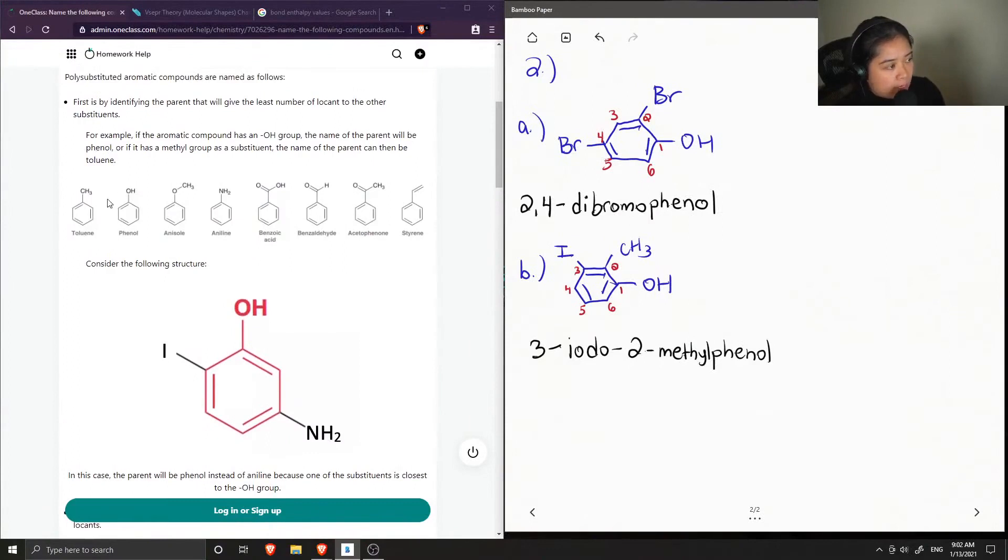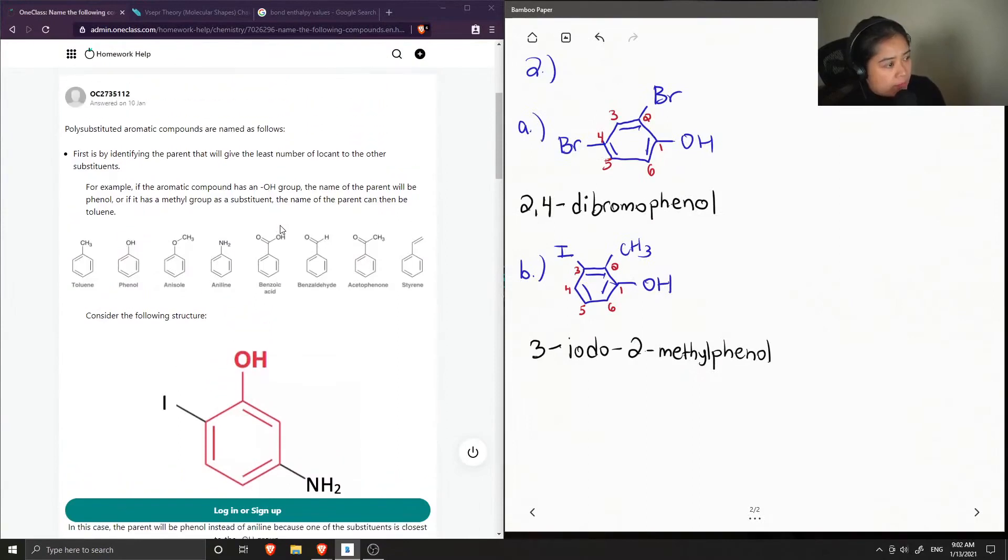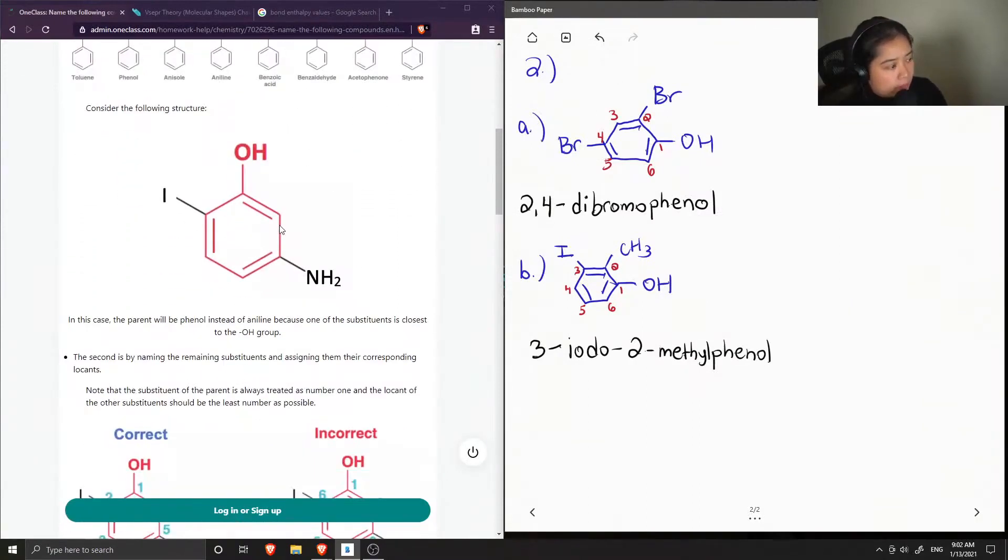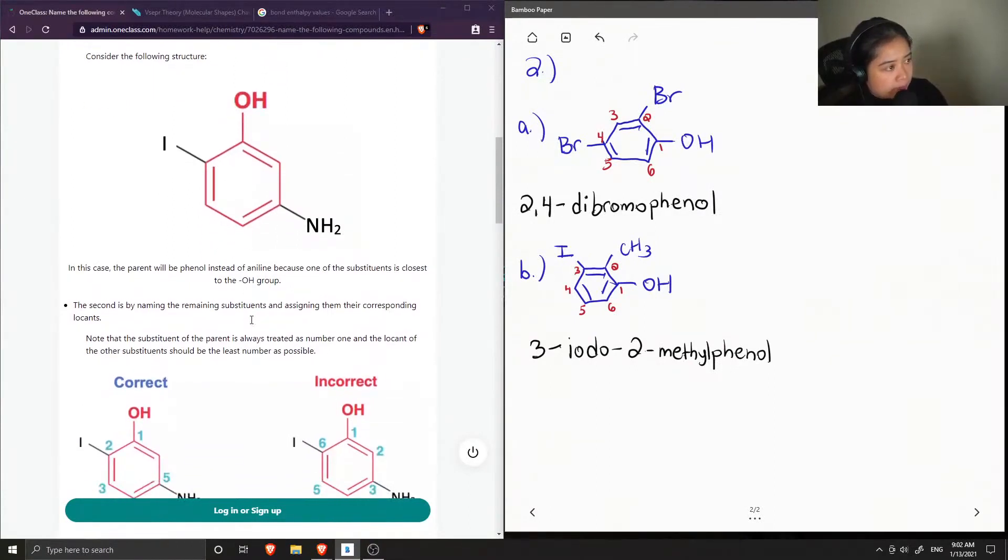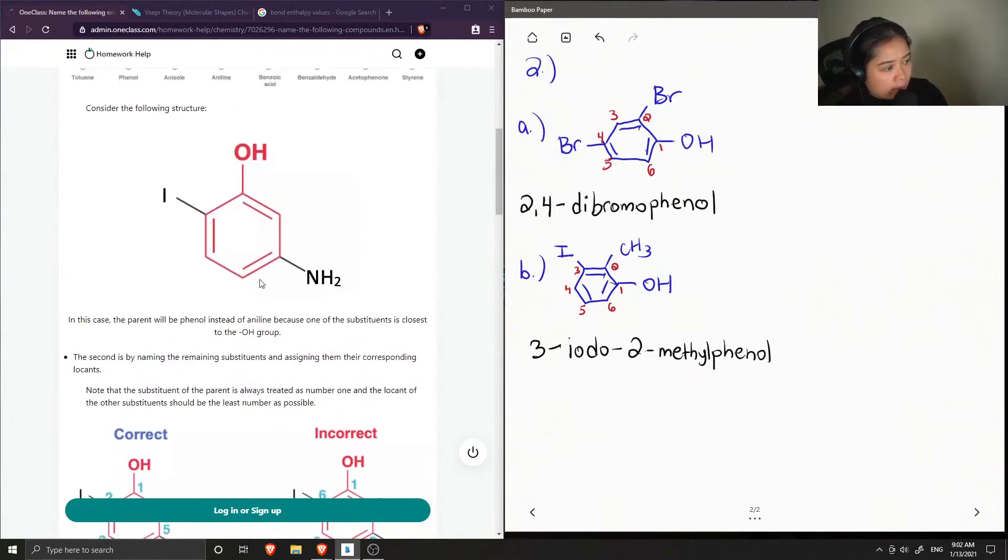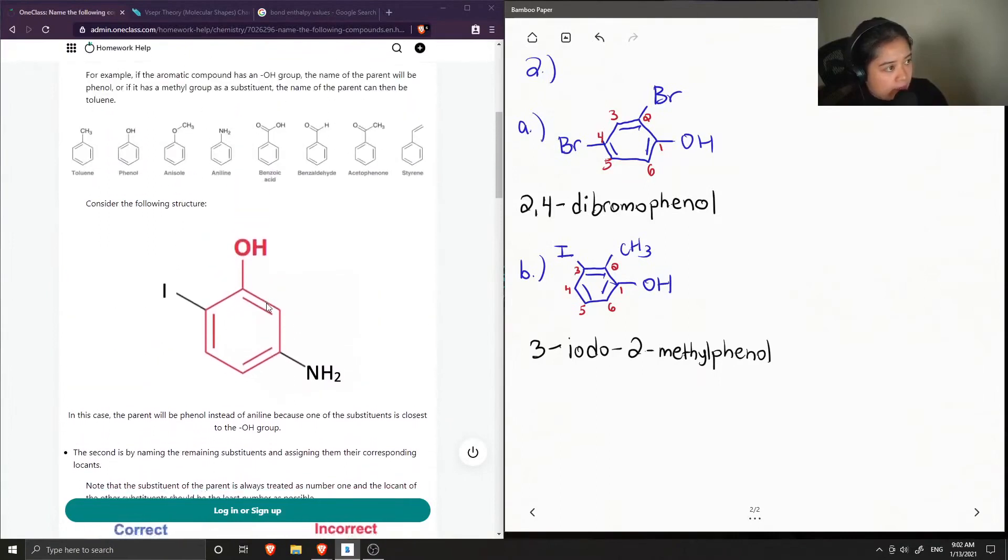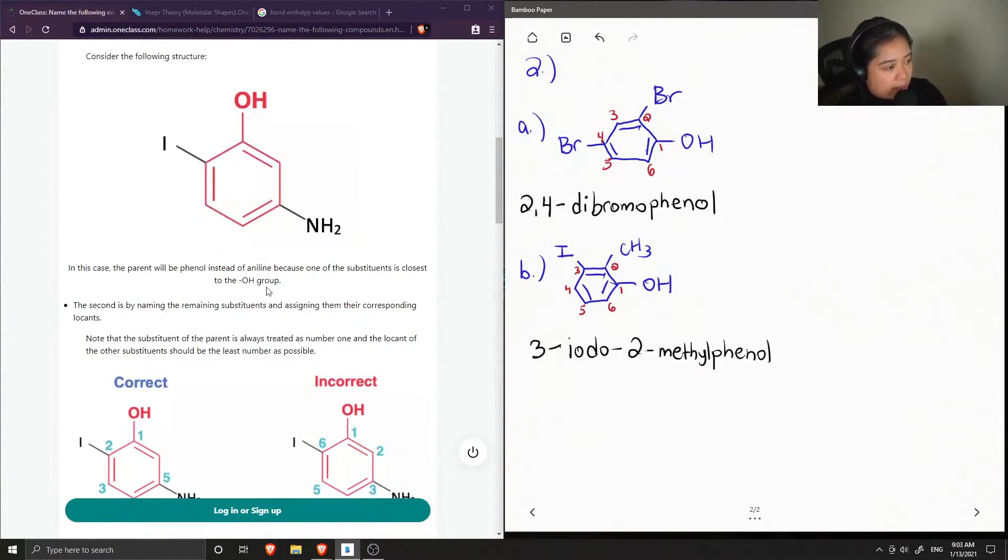Then they just have a lot of different examples of different aromatic compounds. And then starting with this, this is just an example of their own. So in this case, the parent will be phenol instead of aniline because one of the substituents is closest to the OH group. So if the iodine were closer to the NH2, then the parent would be called aniline.